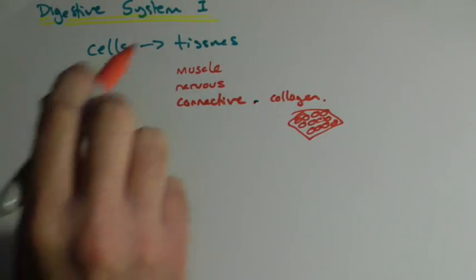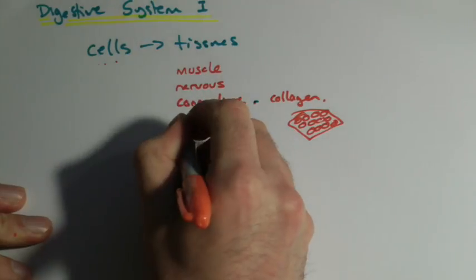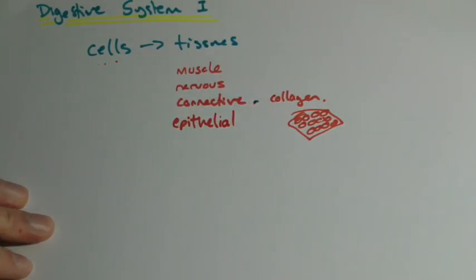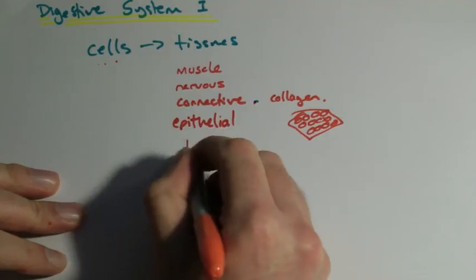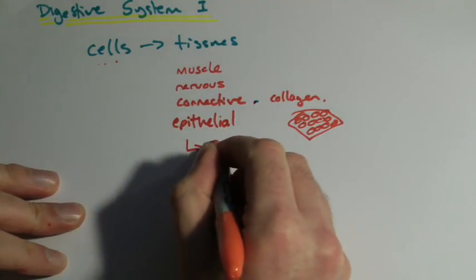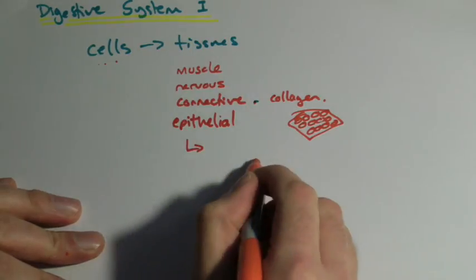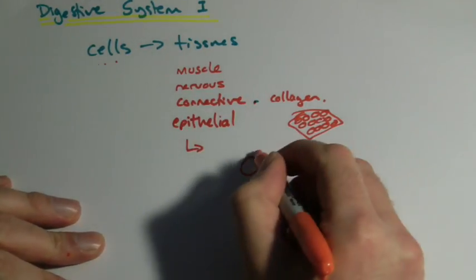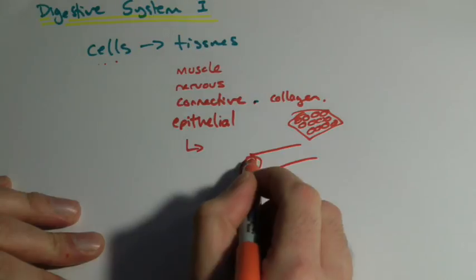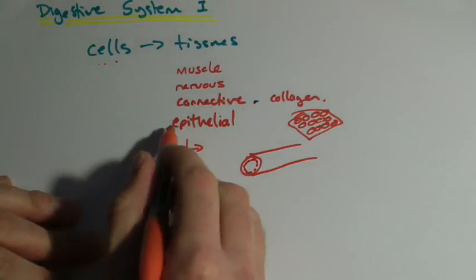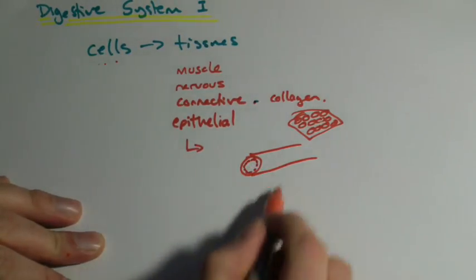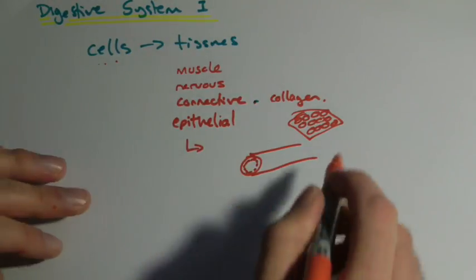And the one that's a bit difficult to remember is called epithelial tissue. And this stuff is the coating for organs. So if you take a blood vessel, the inside lining is epithelial tissue. In fact, the outside lining of it is epithelial tissue.